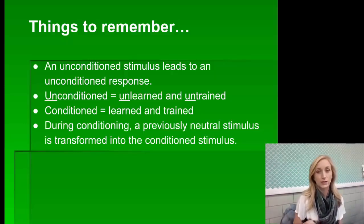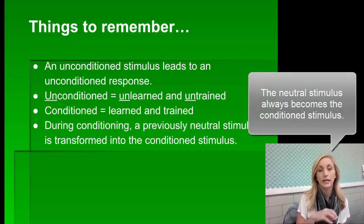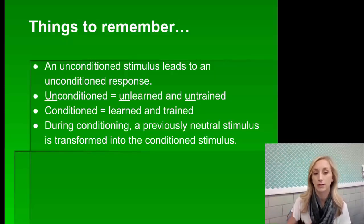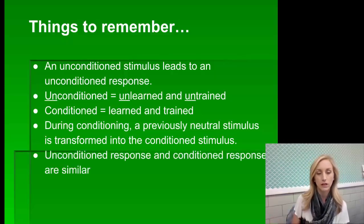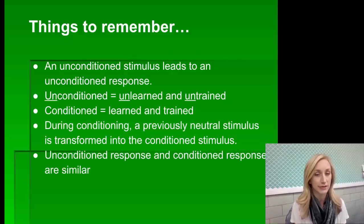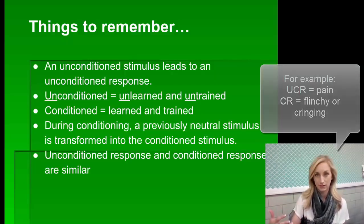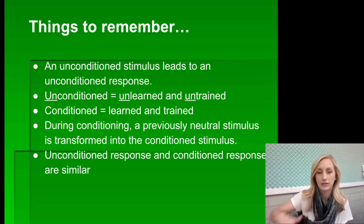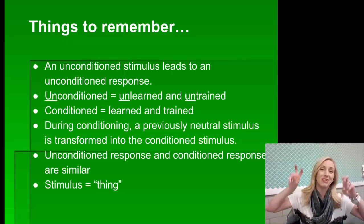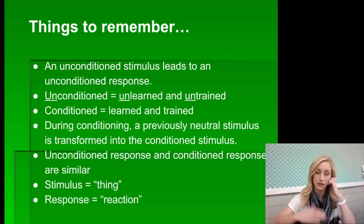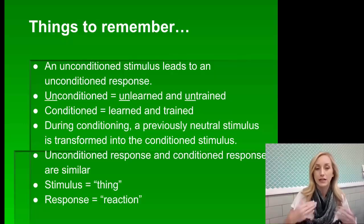Through association we have learned to respond to a certain stimulus. During conditioning, a previously neutral stimulus is transformed into the conditioned stimulus — like lightning, which is neutral at first but becomes the conditioned stimulus. The neutral stimulus becomes the conditioned stimulus 99.9% of the time. The unconditioned response and conditioned response are similar if not the same — for example, unconditioned response is pain, and conditioned response becomes anxiety about the pain. The stimulus is what elicits the response; the response is our behavior in reaction to the stimulus.